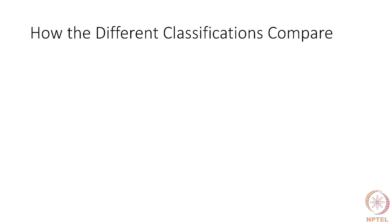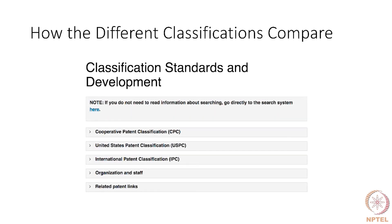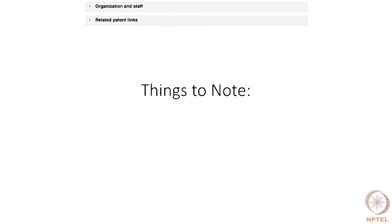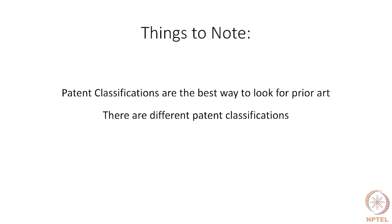How these different classification systems compare — we just have a screenshot of what you just saw on the US Patent Office website. Things to note: patent classifications are the best way to look for prior art. Doing a keyword search may help, but that's not the best way. You need to get to some classification code to traverse the prior art. There are different patterns of classification.